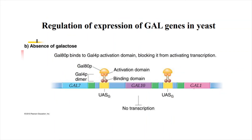In absence of galactose, the gal4 gene product — gal4P dimer — binds to the promoter region along with the gal80 protein product. As a result of this binding, it hinders the access of RNA polymerase to the promoter. Transcription of the downstream genes gal10 and gal1 cannot continue. This is what happens in absence of galactose.